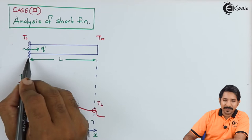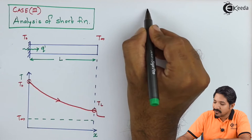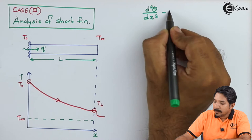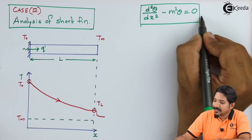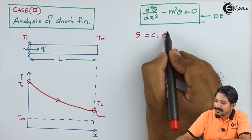Now before this, let me write down the differential equation that we are working on. It is d² theta upon dx² minus m² theta is equal to 0. The solution of this differential equation we got was theta is equal to C1 e raised to mx plus C2 e raised to minus mx.